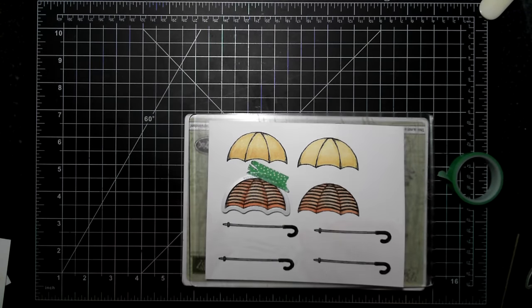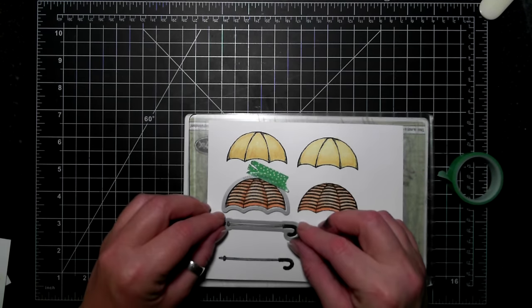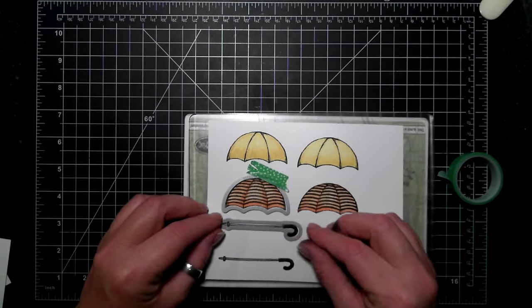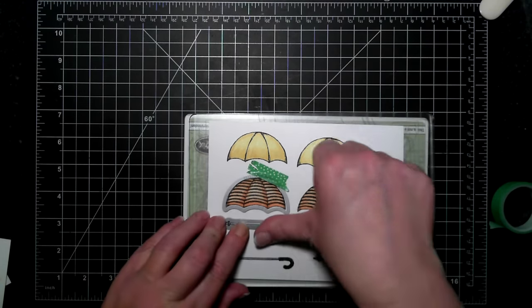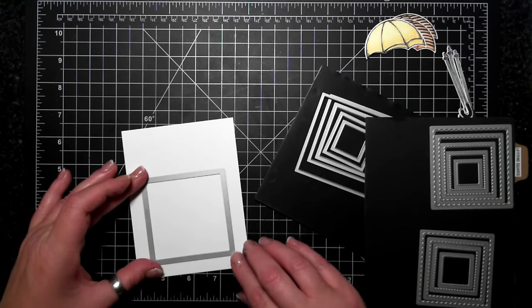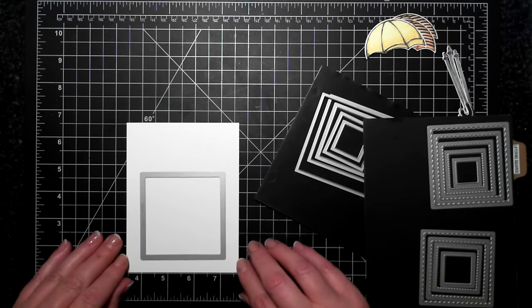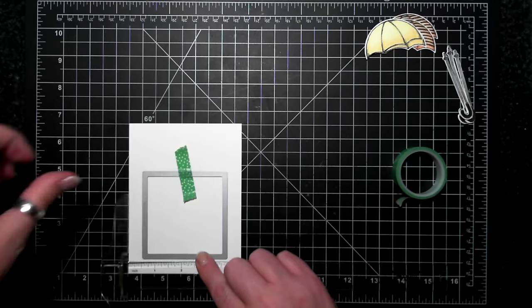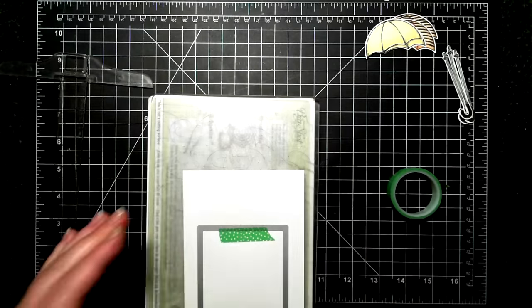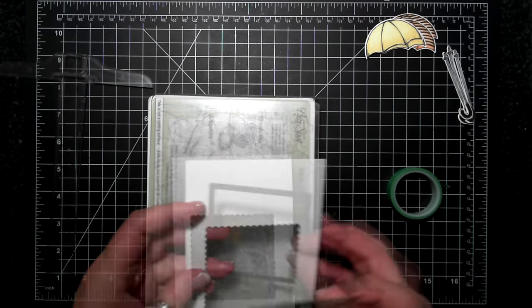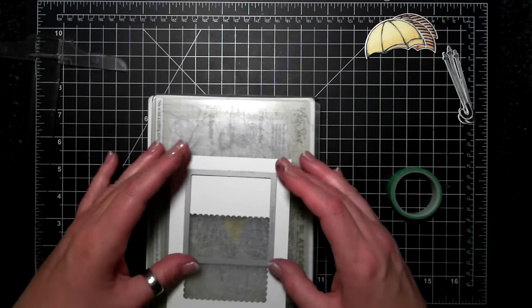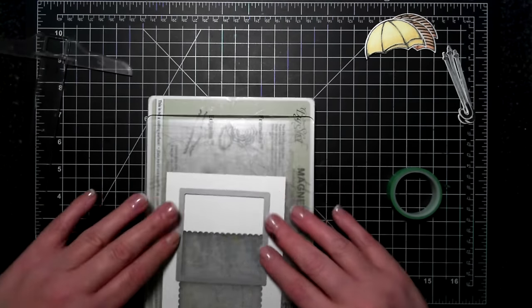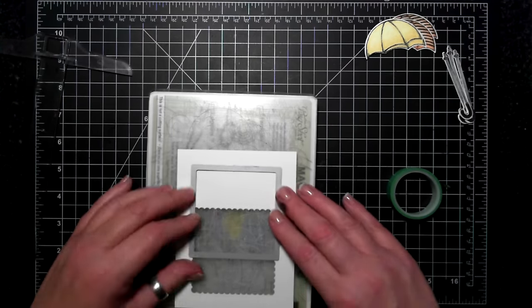So I ran that through the Big Shot and now on another piece of card, this is Whisper White Thick, I am using the layering square framelits. You can see I cut the largest scallop one there and then I had to cut it twice to make a rectangle so it sort of locks into place.